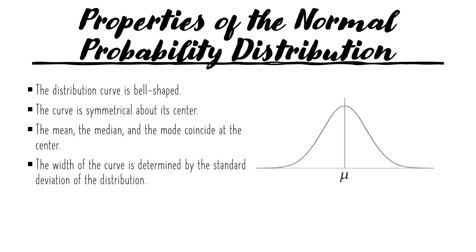Let's talk about the properties of the normal probability distribution. The first property: the distribution curve is bell-shaped, as you can see in this graph. The second property: the curve is symmetrical about its center. The line at the center is called the mirror line.